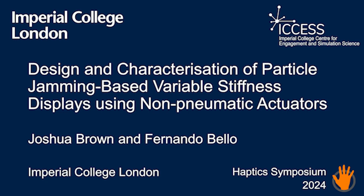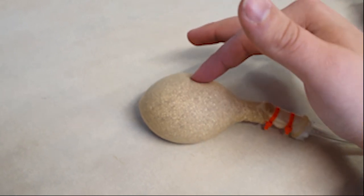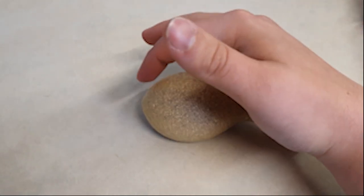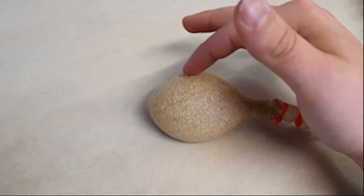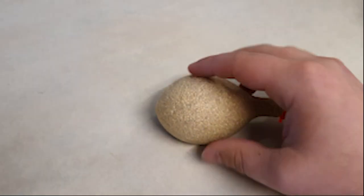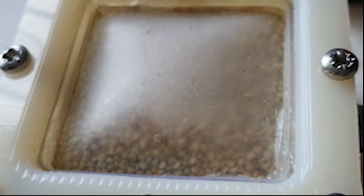I'm Joshua Brown from Imperial College, London. Particle jamming is a well-explored technique for rendering hardness and softness in tactile interfaces and works by evacuating the air from a particle fluid to force the individual particles to compact and the fluid as a whole to harden.